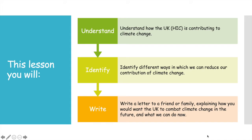Today we will be looking to understand how the UK is contributing to climate change, how we can identify ways in which we can reduce our contribution to climate change, and we will write a letter to a friend — only a short one — explaining how you would want the UK to combat climate change in the future and what we can do immediately. That letter will be about one A4 side of paper, explaining what they can do today to help, what the UK has done recently, and what you want to happen in the future.